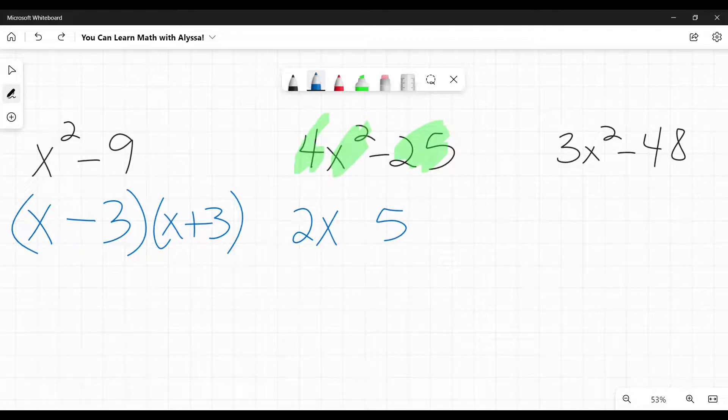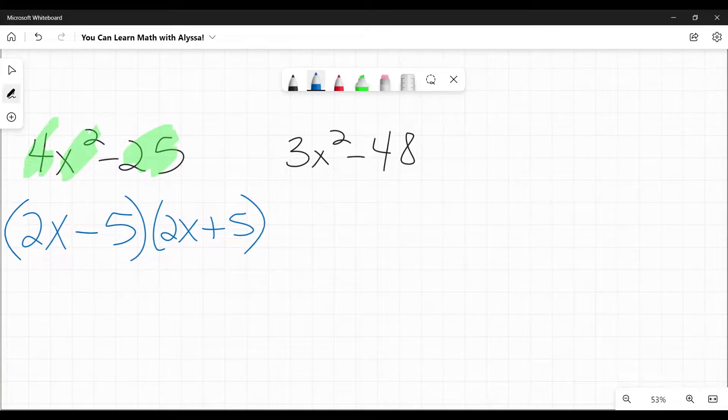Big thing in the middle, is that a minus? Yes it is. So I can do this as two x minus five, two x plus five. Boom, factored. Last but certainly not least, going to scoot this over.